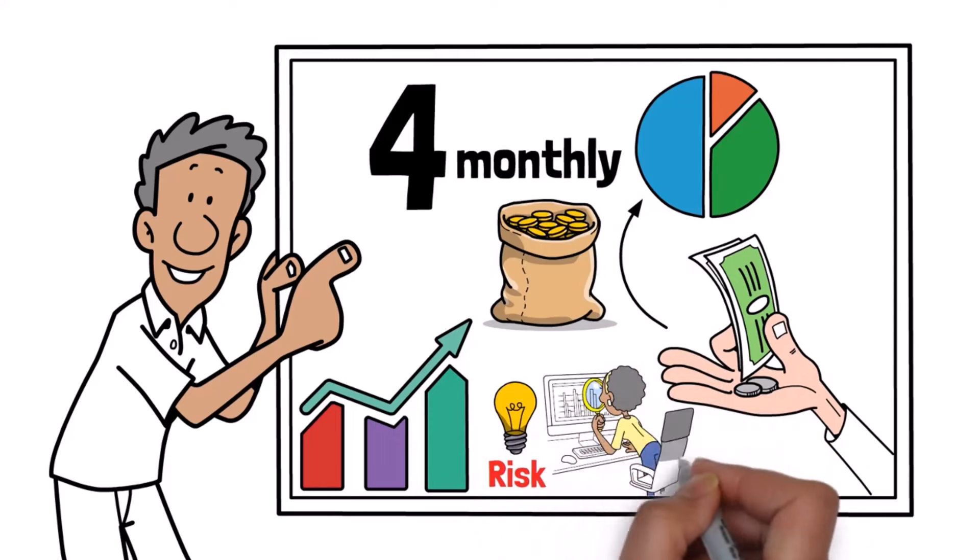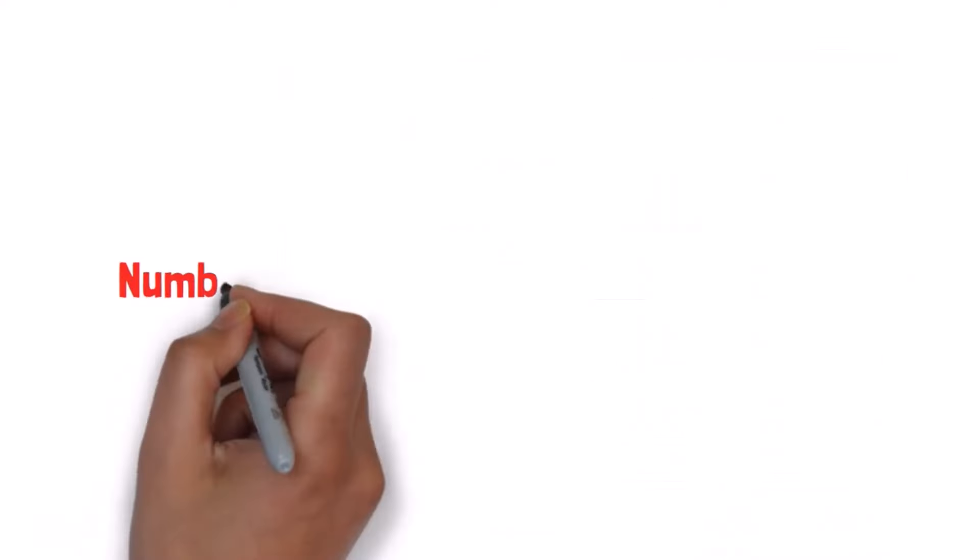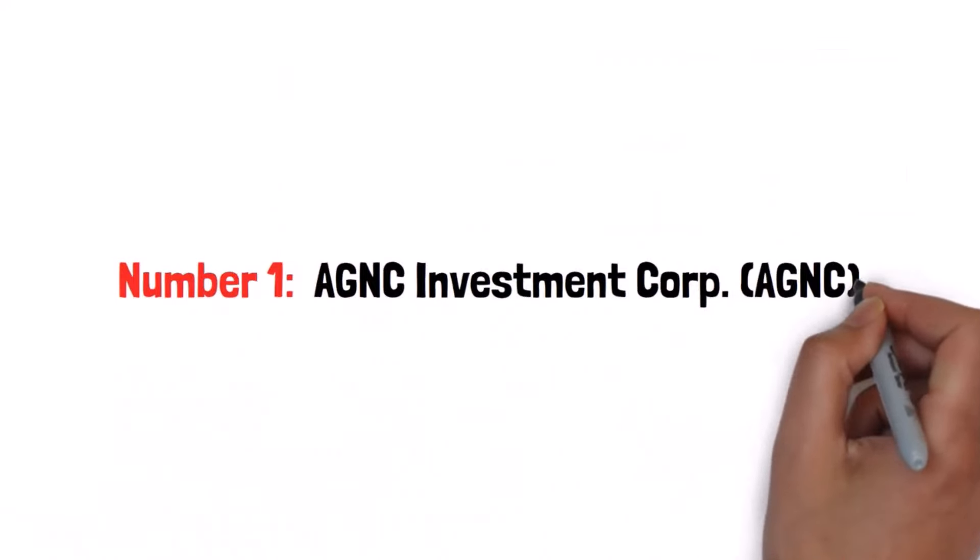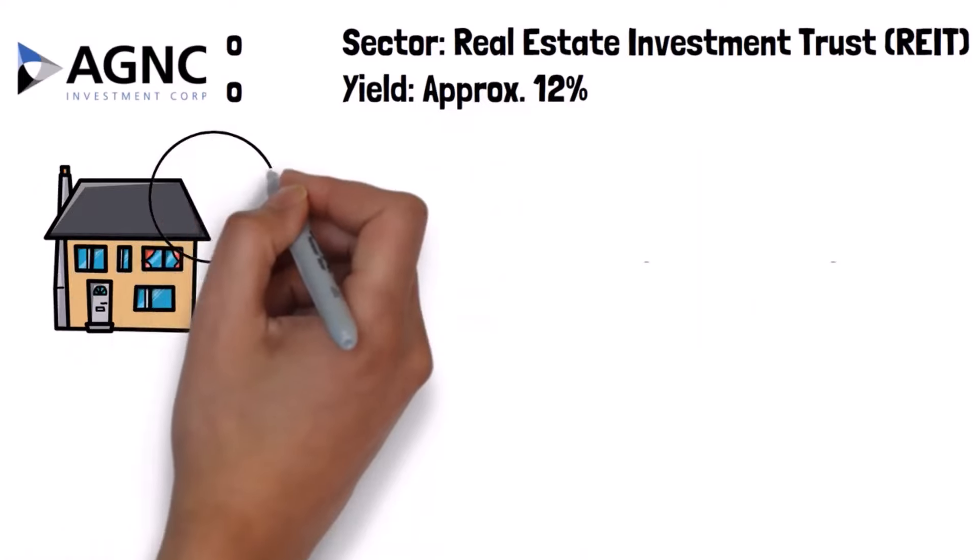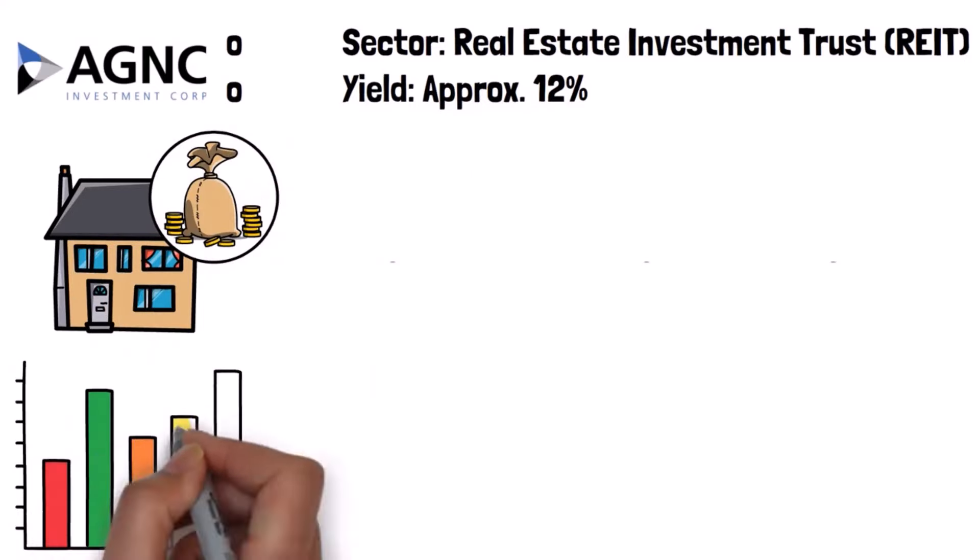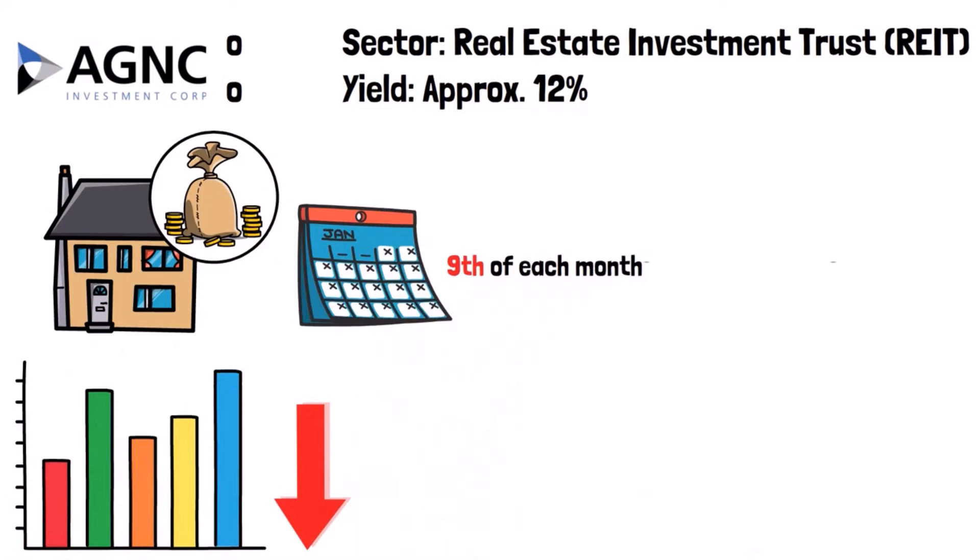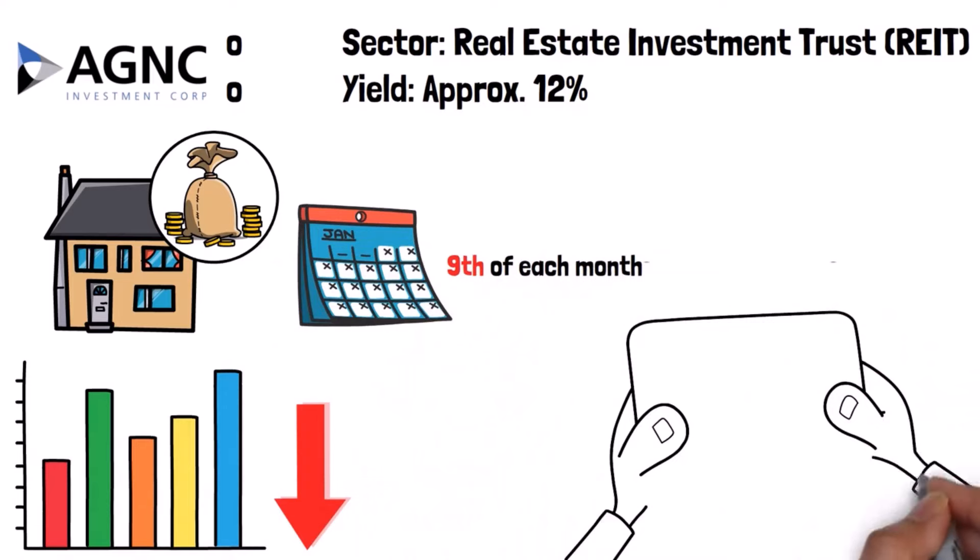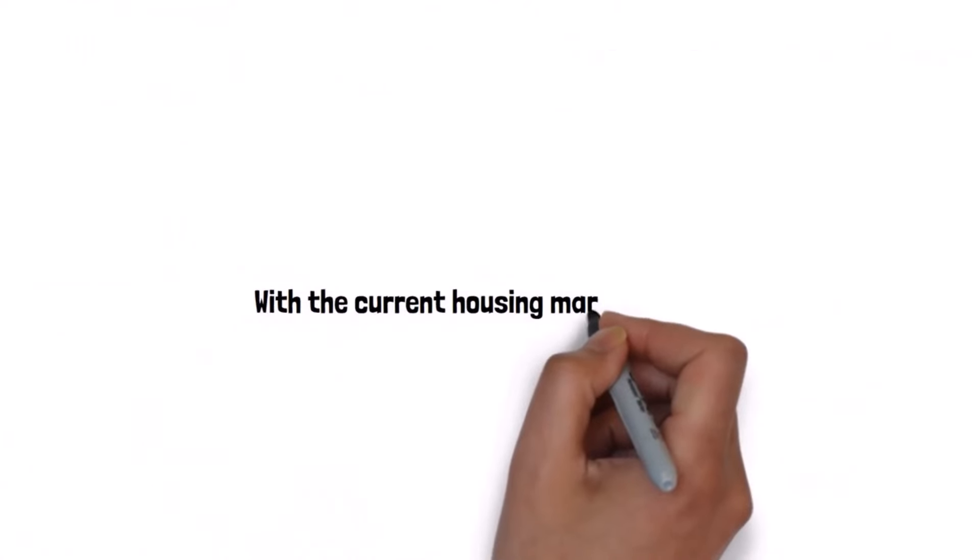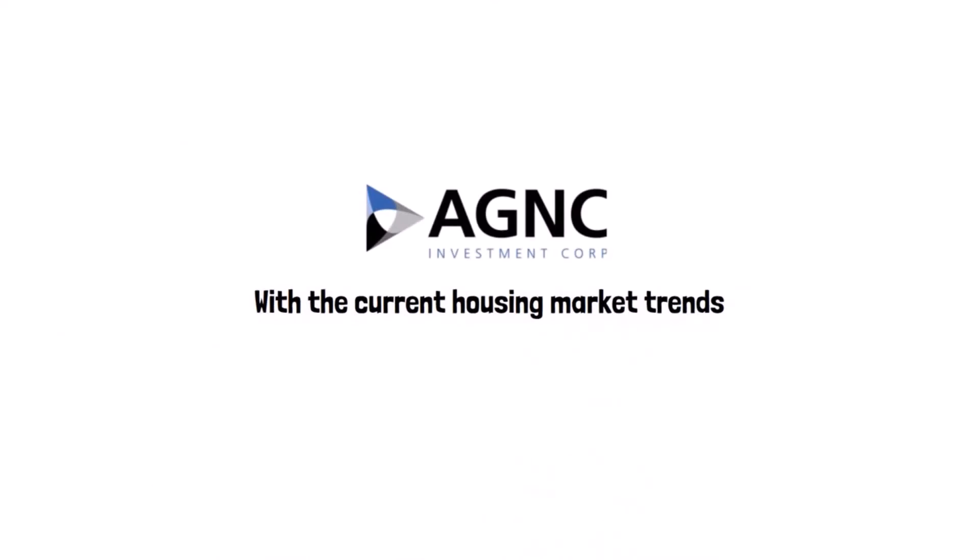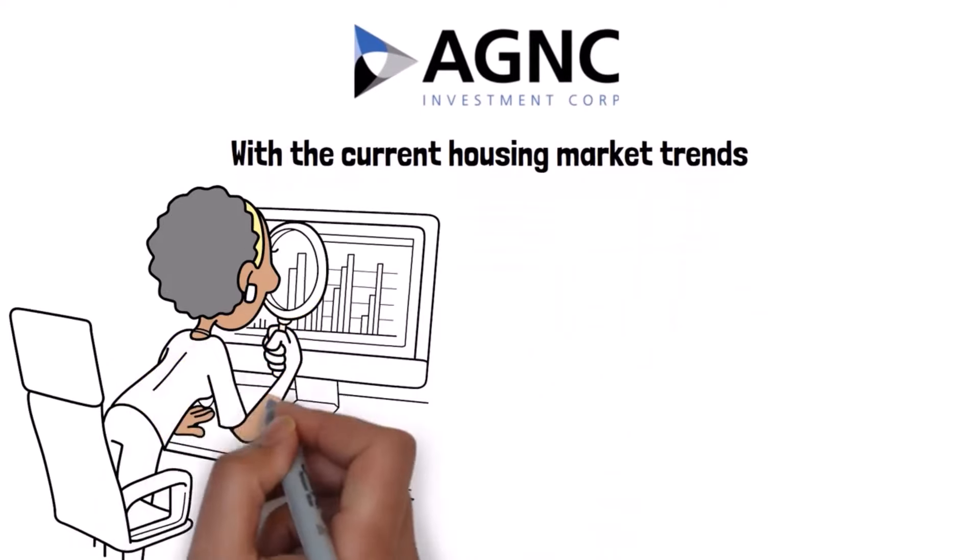Number one: AGNC Investment Corp. Sector: Real Estate Investment Trust (REIT). Yield: approximately 12%. AGNC focuses on residential mortgage-backed securities. Its high yield is attractive, but be mindful of interest rate risks. Payment date: 9th of each month. AGNC is known for its robust dividend payouts, making it a favorite among income-seeking investors. With current housing market trends, AGNC remains a solid choice, but always keep an eye on interest rate changes.